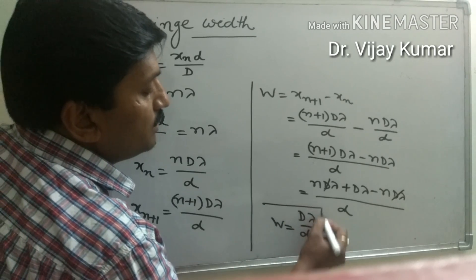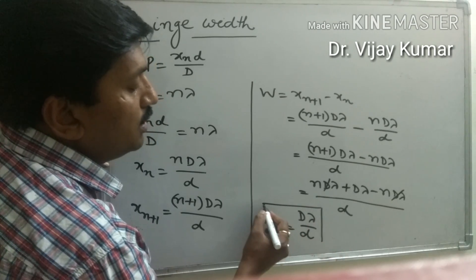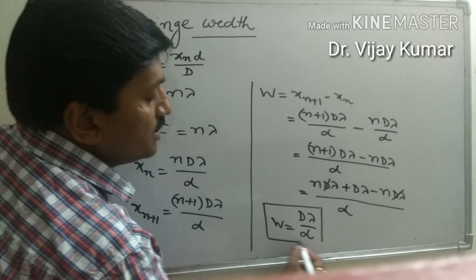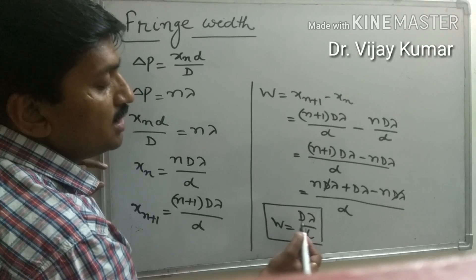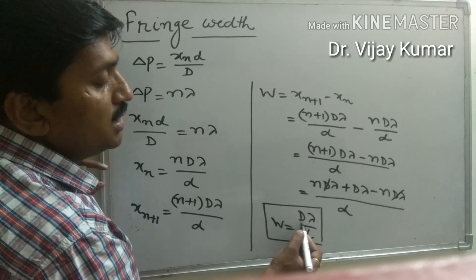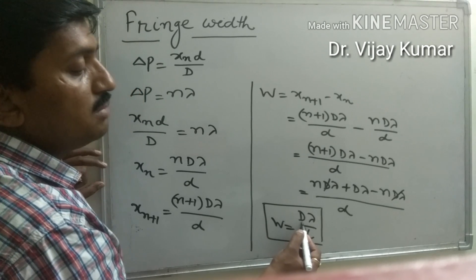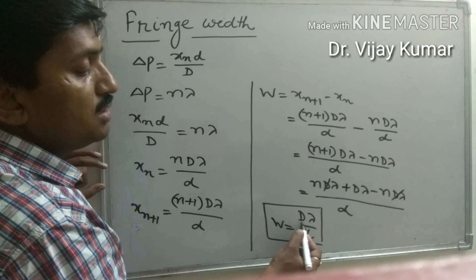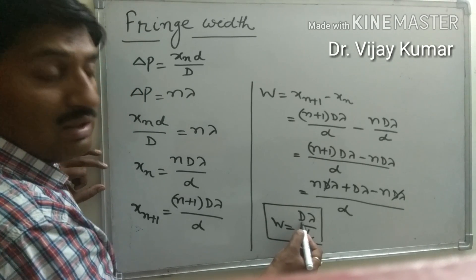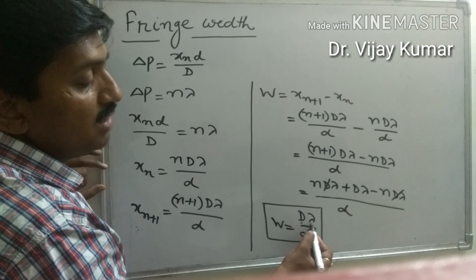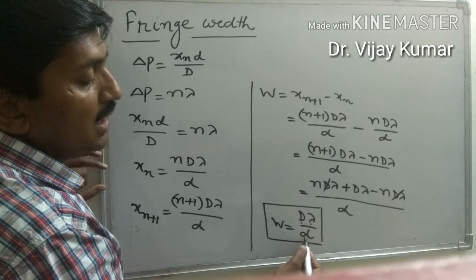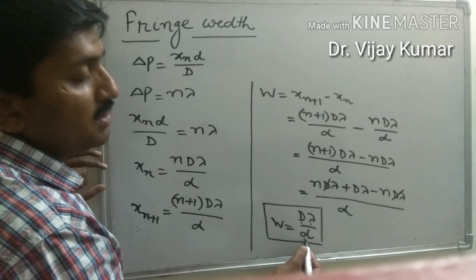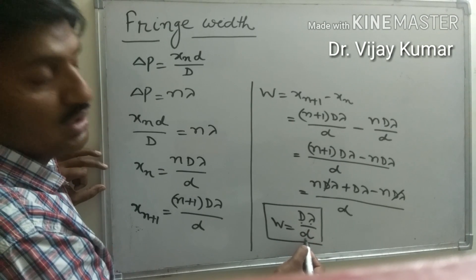This is the fringe width for bright fringes. This fringe width depends upon the separation between the source and the screen, the wavelength of monochromatic light, and the separation between the two sources.